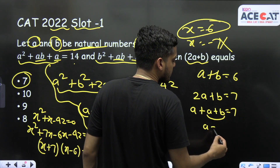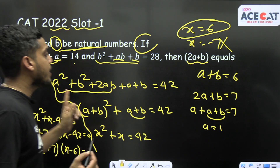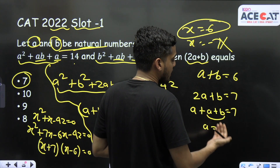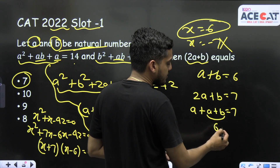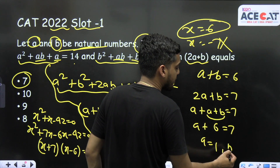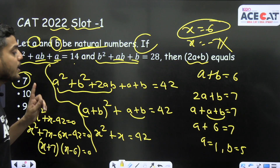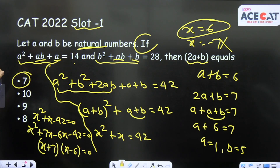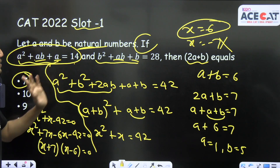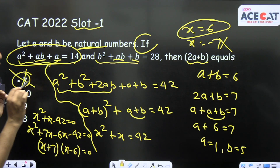If a = 1, then b must be 5 (since a + b = 6). Checking the first equation: 1² + 1×5 + 1 = 7, but we need 14. So the condition is not satisfied, and option A cannot be the correct answer.